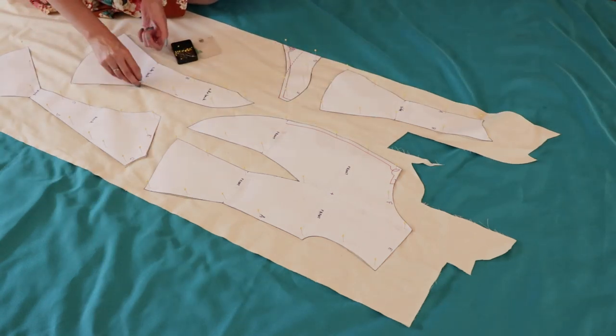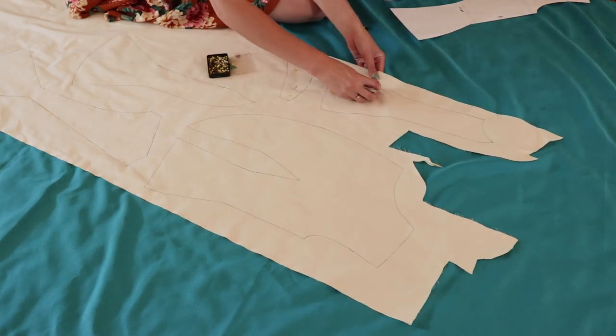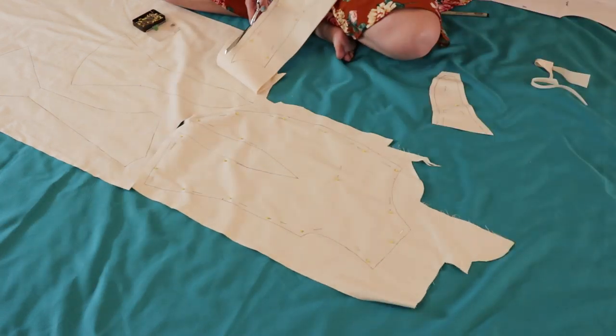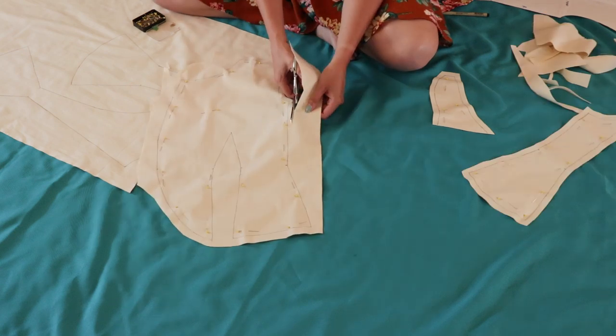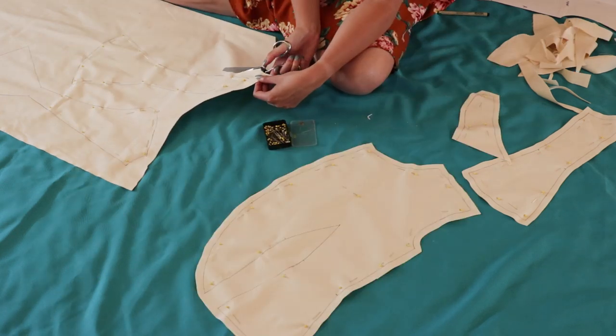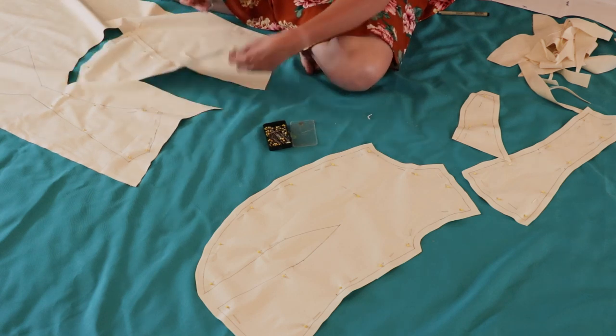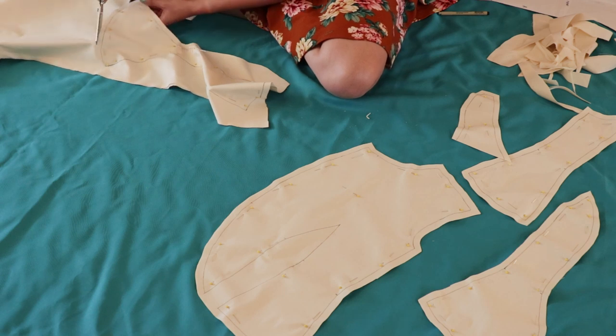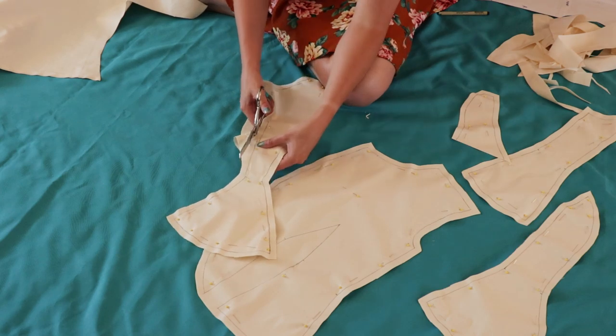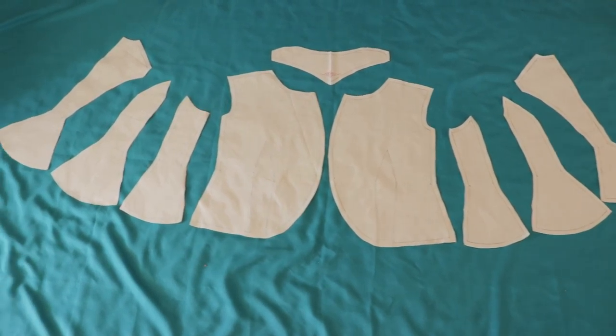Now when you make a pattern yourself, it's a really good idea to test it and make sure it actually fits before you cut into the actual fabric. So I bought some of this unbleached cotton muslin. It's really cheap. I got it for like two dollars a yard and I traced on the pattern pieces.